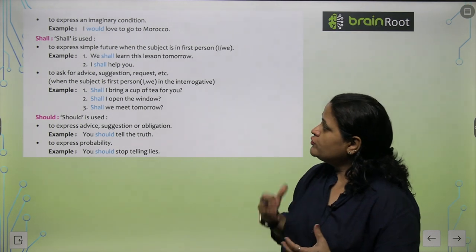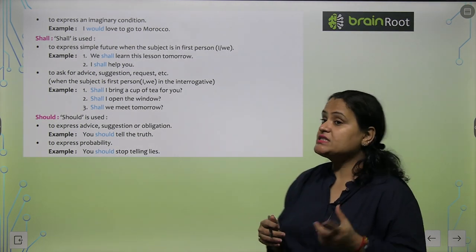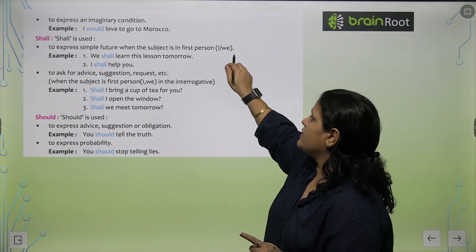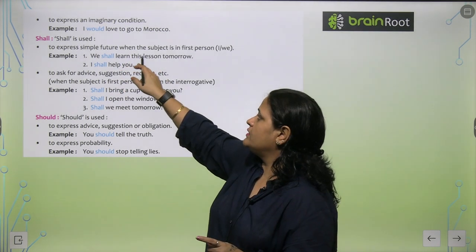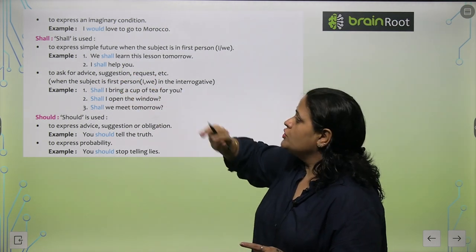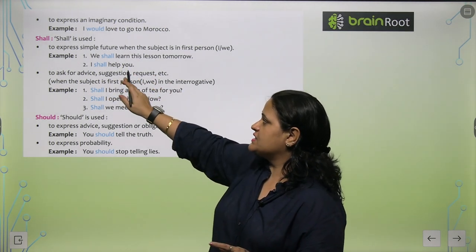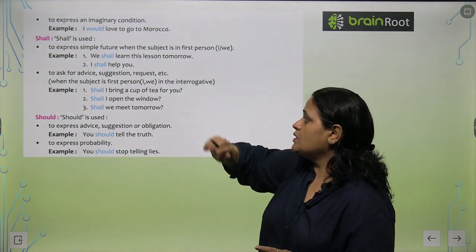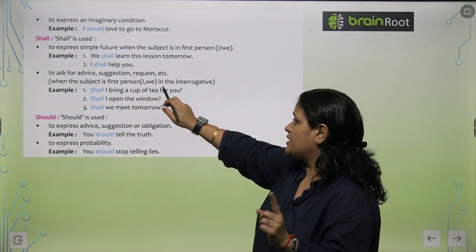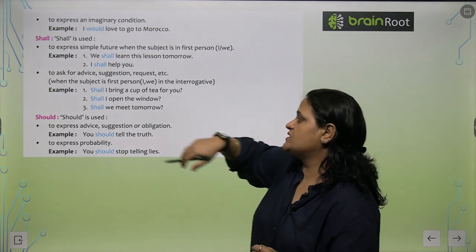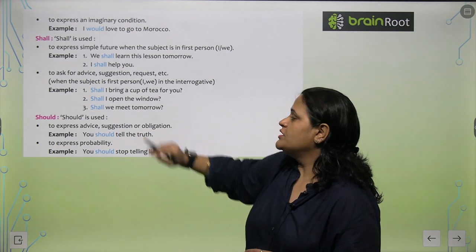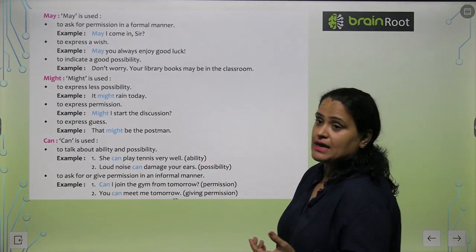'Shall' bhi simple future ko express karta hai when the subject is in first person — like I or we. For example: 'We shall learn this lesson tomorrow.' 'I shall help you.' Shall is also used to ask for advice, suggestion, and request when the subject is first person in interrogative — like 'Shall I open the window?' 'Shall we meet tomorrow?'